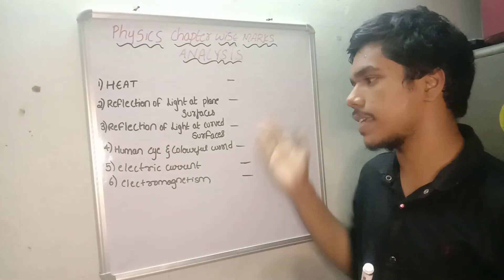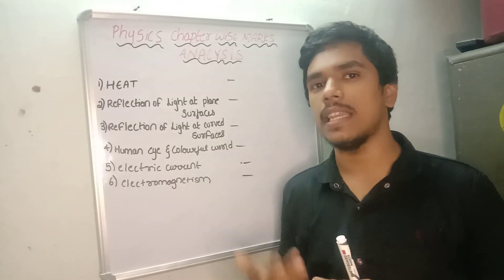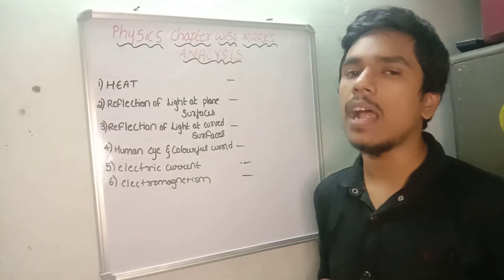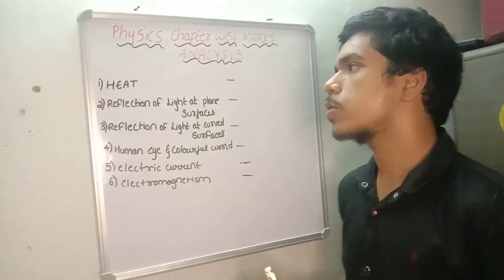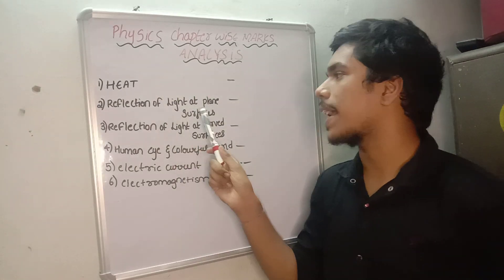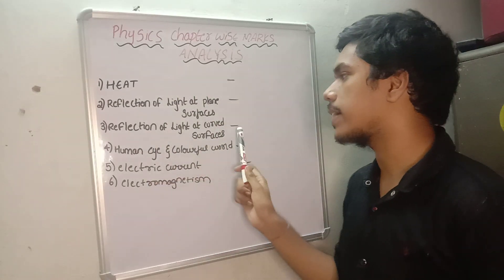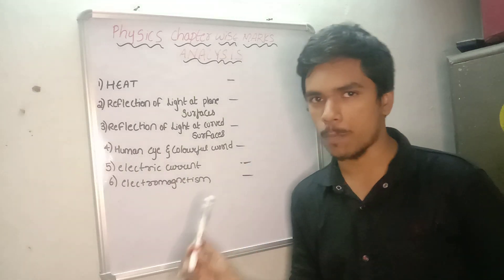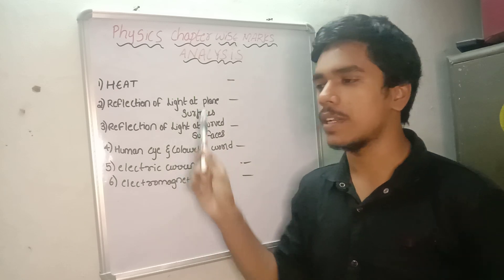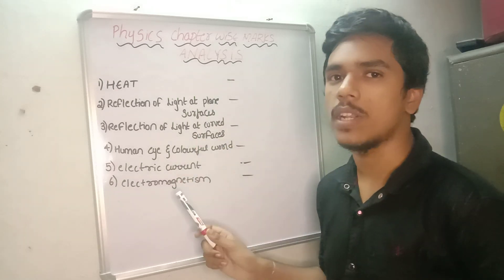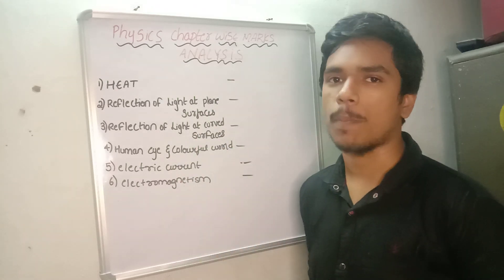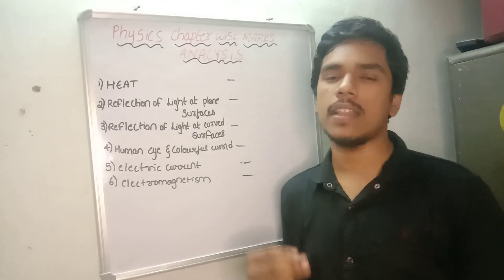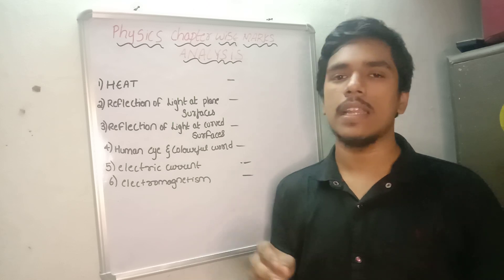Physics chapter wise marks — in the last previous years we will discuss how many chapters we will complete. So first of all: heat, reflection of light at plane surface, reflection of light at curved surfaces, human eye and colourful world, electric current and electromagnetism. In this video, previous year analysis of these six chapters, any questions — we will discuss the physics paper.